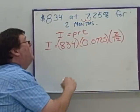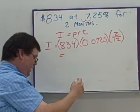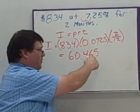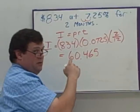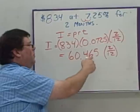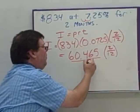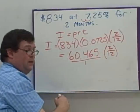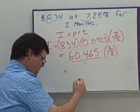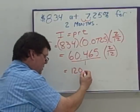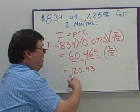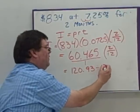I do 834 times 0.0725 and get 60.465. I didn't drop the 5 because I'm not finished yet — I still have the 2 twelfths to multiply. When you multiply a whole number by a fraction, you put the whole number over 1, then do top times top and bottom times bottom. So 60.465 times 2 gives me 120.93, and 1 times 12 gives me 12 — I'll just write it as divide by 12.